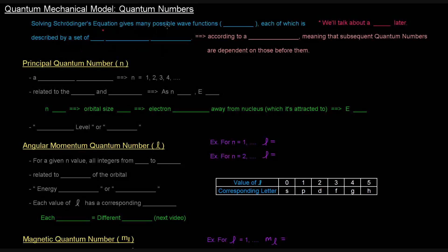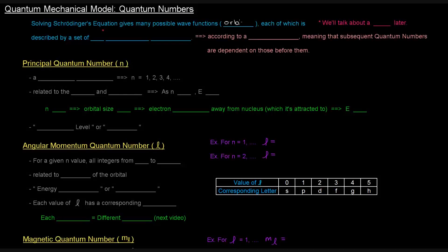Solving Schrödinger's equation gives many possible wave functions, or atomic orbitals. Each of these is described by a set of three quantum numbers, and these quantum numbers are according to a hierarchy, meaning that subsequent quantum numbers are dependent on those before them. The first three quantum numbers describe the actual orbital, whereas the fourth one describes the electrons specifically — we'll get to that later.